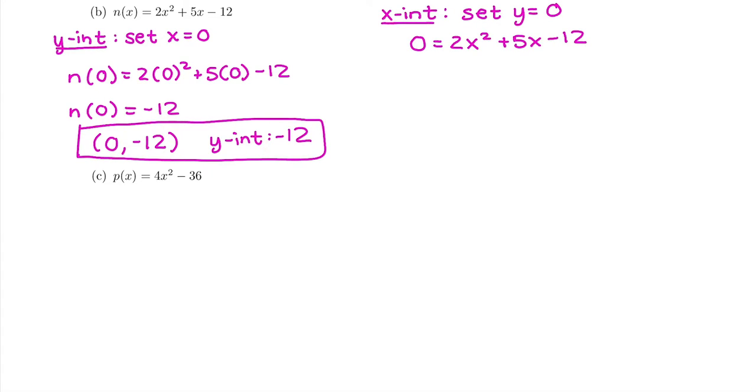Now what makes this difficult is that our leading coefficient isn't just a nice 1. It's not x² + 5x - 12. It's 2x² + 5x - 12. So ideally, I would like to just take out a greatest common factor of 2. That way, I don't have a coefficient other than 1 in front of x².